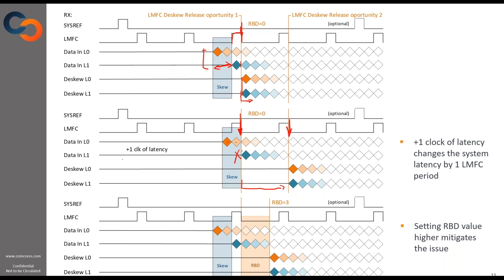So one clock of latency on your lanes will actually cause a whole LMFC period of latency, and your deterministic latency adjustment causes a big problem. But in most systems you can monitor the fill level of the buffer or the arrival times and adjust your RBD. If you move your release opportunity — for example, plus three cycles — then whatever jitter or additional latency occurs will not affect your release opportunity, and you'll be able to release safely even if the arrival times differ. It's very important to control this to achieve good deterministic latency.